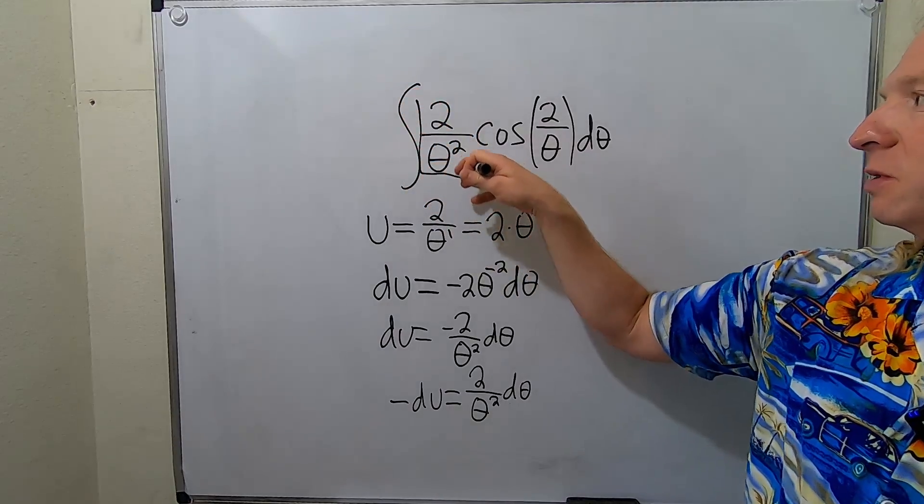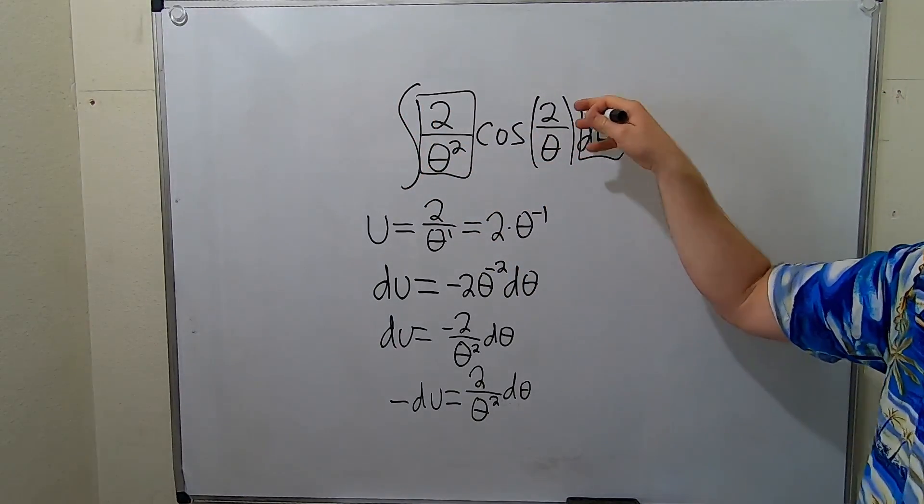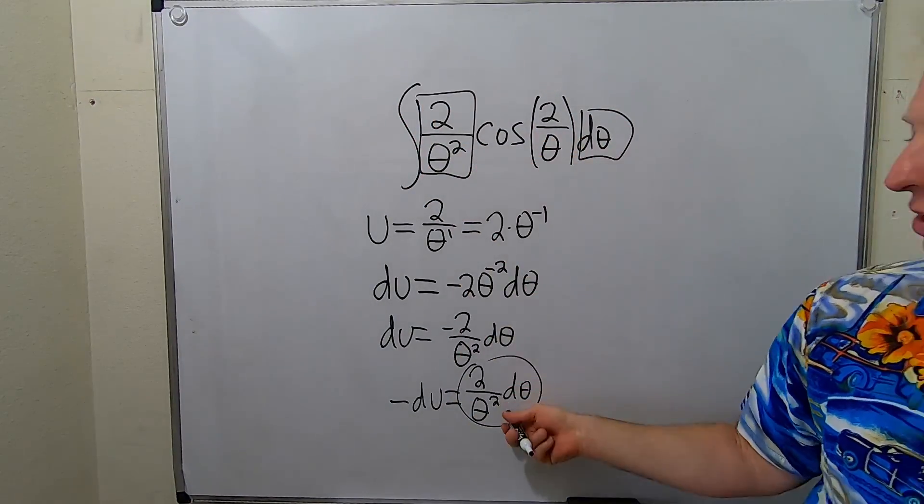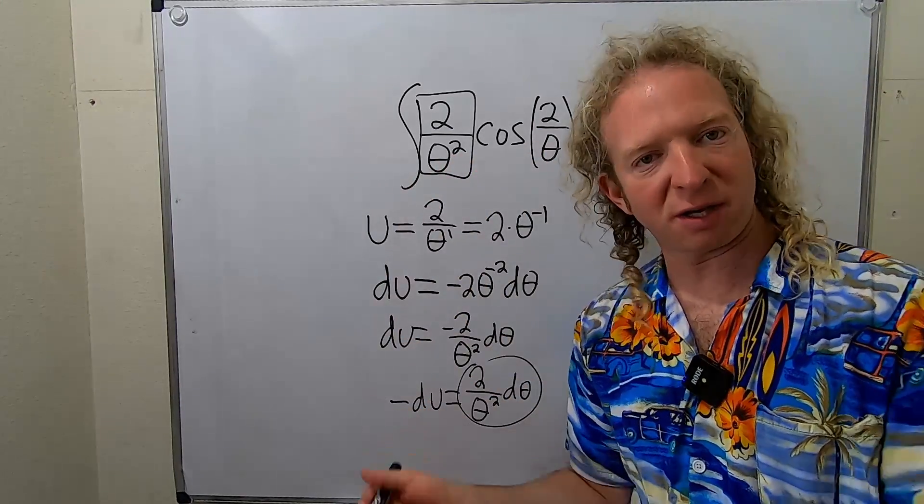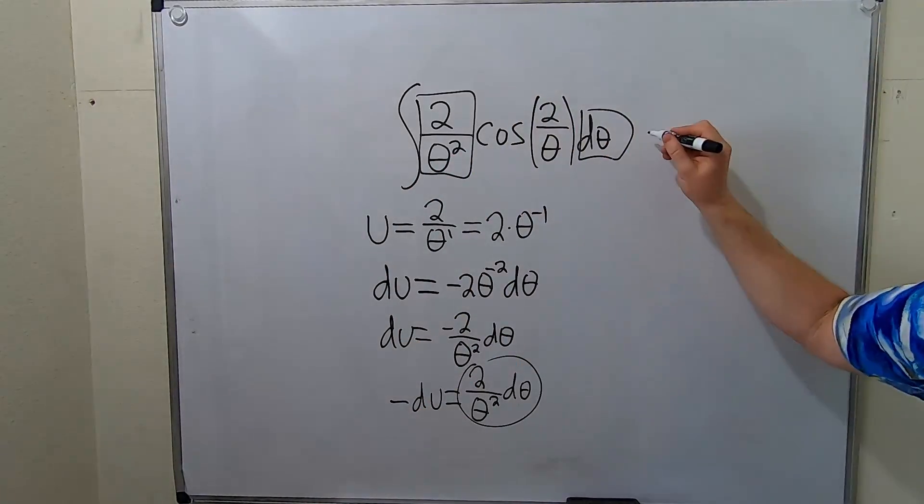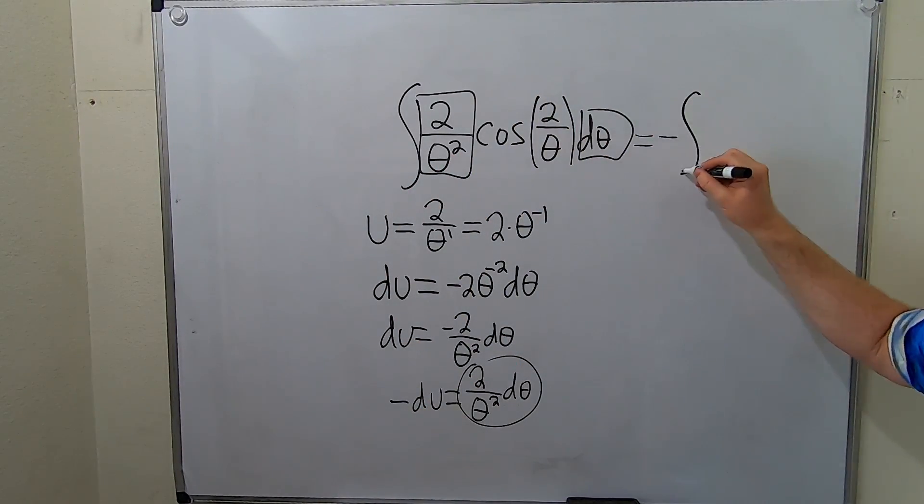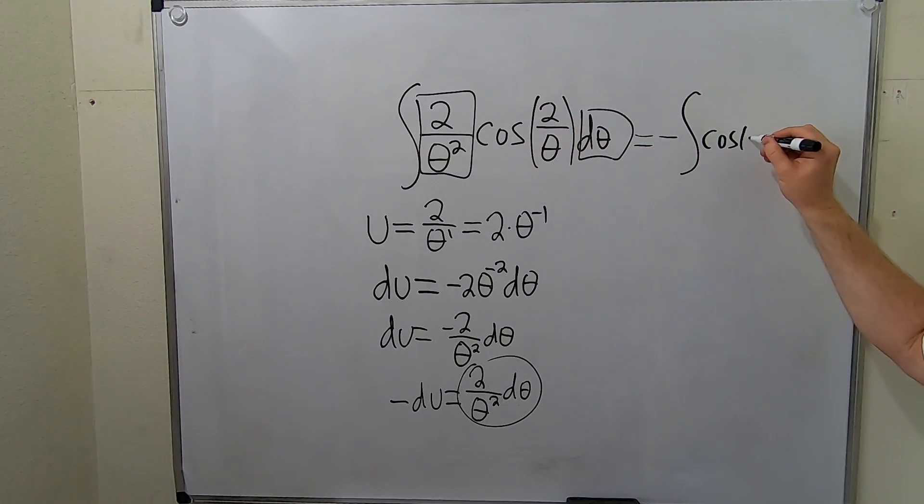We've got this here, this is beautiful. And that's this. Everything here is this. So these boxes are just going to become negative du. So this is equal to negative, we'll pull the negative out, cosine of u du.